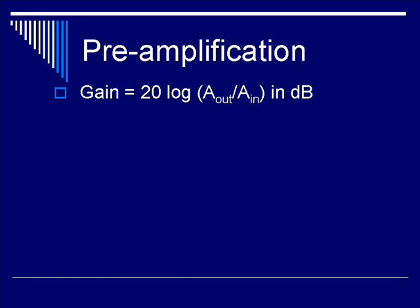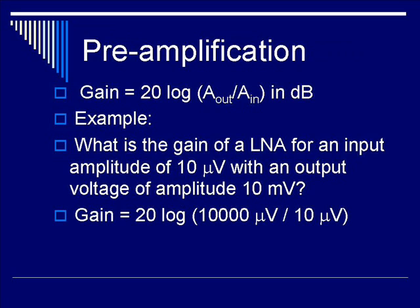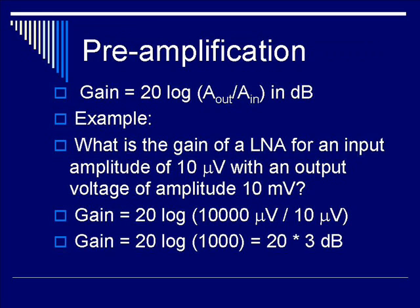Pre-amplification: the definition of gain is 20 log of A-out over A-in in decibels. We can do an example to illustrate this. What is the gain of an LNA for an input amplitude of 10 microvolts over a resulting output voltage of 10 millivolts? There are 1,000 microvolts in 1 millivolt, so the gain would be 10,000 microvolts — which corresponds to 10 millivolts — divided by 10 microvolts. Taking the log, you have 20 times 3, giving a gain of 60 decibels coming out of the low noise amplifier.